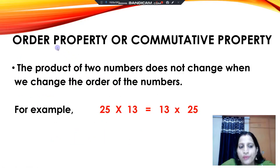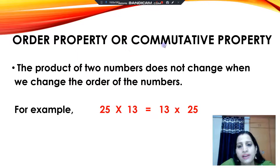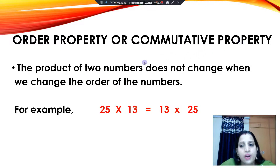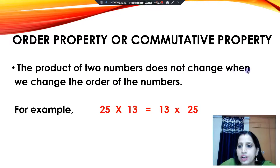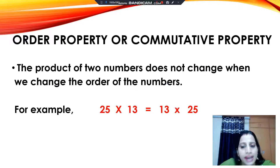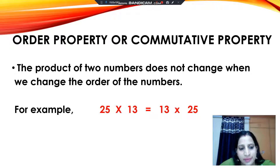Now we will start with the first property — that is the order property or commutative property. According to this property, the product of two numbers does not change when we change the order of the numbers. This means we can multiply the numbers in any order and our product will remain the same.